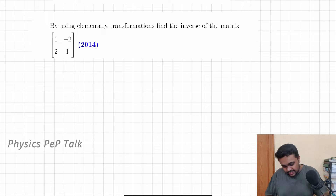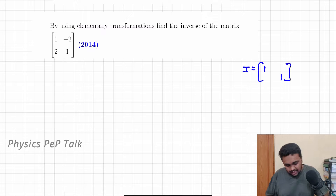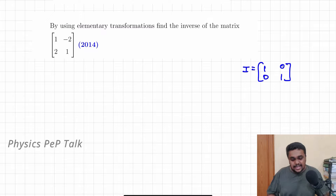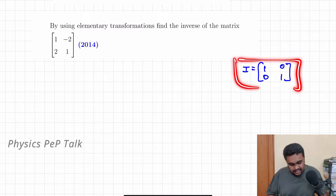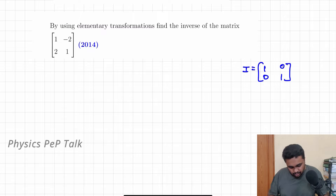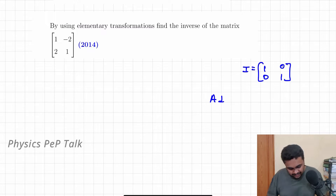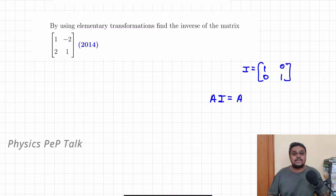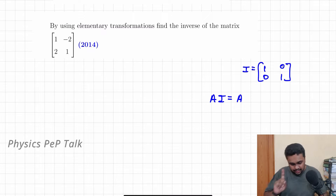The identity matrix is denoted by the letter I. The principal diagonal elements are 1 and the non-principal diagonal elements are 0. Such a matrix is called the identity matrix. Now, A inverse — I am going to solve the definition. If I have a matrix A and I multiply this matrix A with I, the identity matrix, the resultant will always be equal to the matrix A. This is one property.